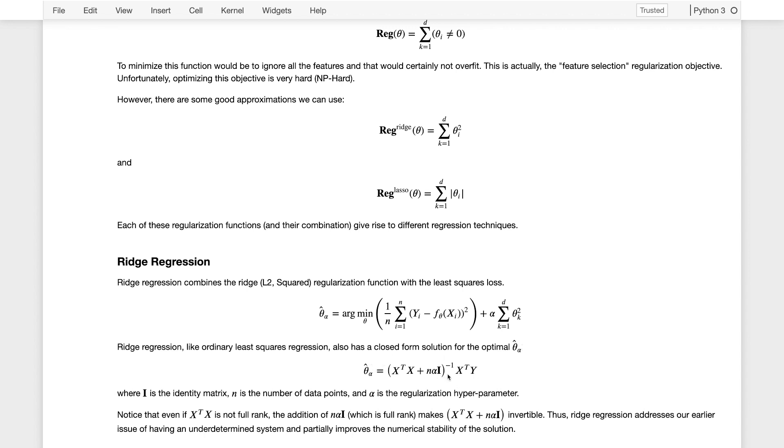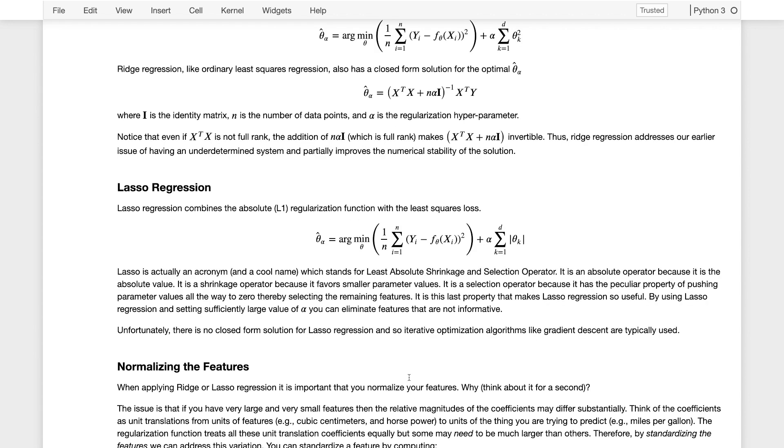One of the neat things this does is by adding this identity matrix, or the scaled identity matrix to x transpose x, it makes sure that this matrix here, this sum, is full rank. So it addresses one of the concerns we encountered earlier with high dimensional data.